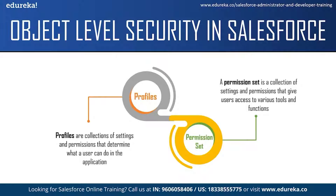Permission sets are a collection of settings and permissions that extend user functional access without changing their profile. If a permission isn't enabled in a profile but is enabled in a permission set, users with that profile and permission set can access the object. For example, if several users need to delete and transfer leads but their profile doesn't allow it, you can create a permission set to grant that capability.